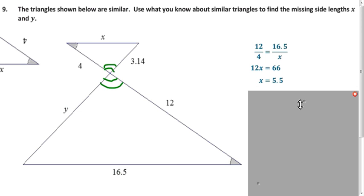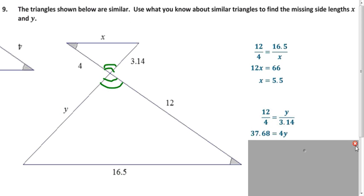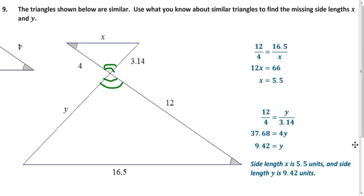Same idea for y. 12 over 4 is y over 3.14. And so, the y lines up at that 3.14. So, that makes sense. Do cross product. Divide by 4 and you get 9.42.